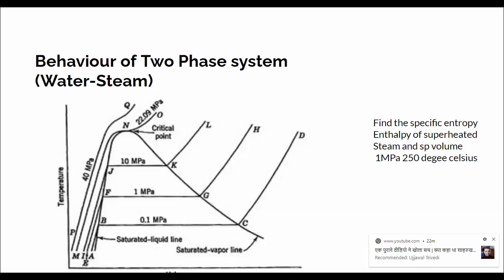The given steam is superheated. Why? Because it is given that the steam has a temperature of 250 degrees centigrade at a pressure of 1 megapascal. Steam at 1 megapascal with temperature greater than 180 degrees centigrade is superheated, because its temperature exceeds the saturation temperature. The degree of superheat is 250 minus 180, which is 70 degrees centigrade.